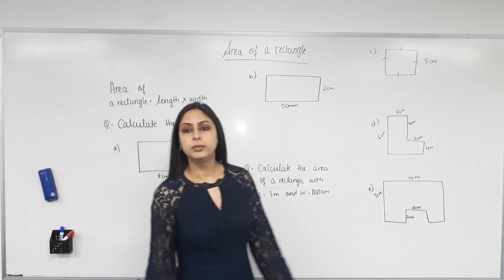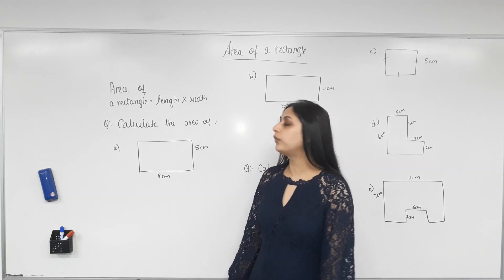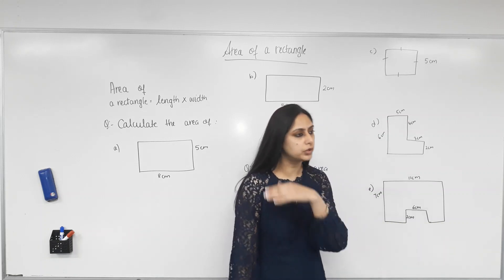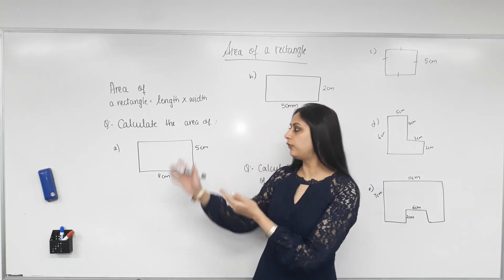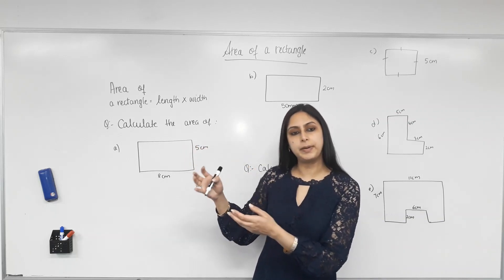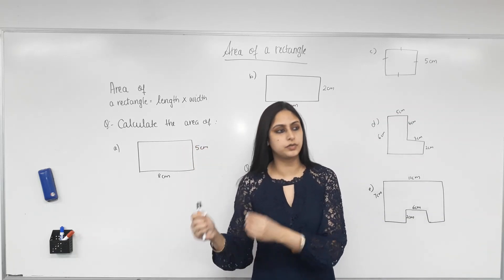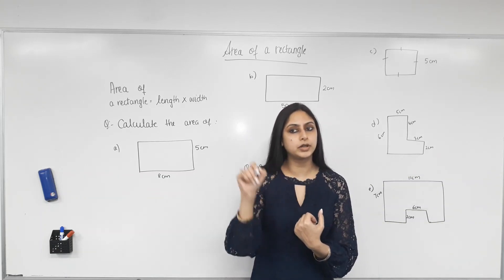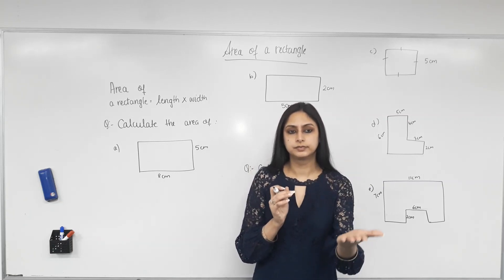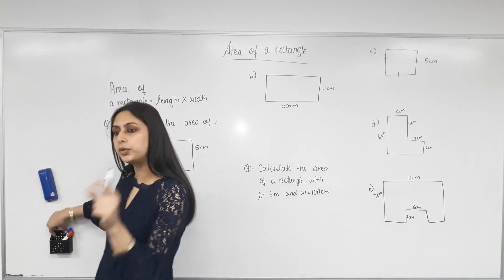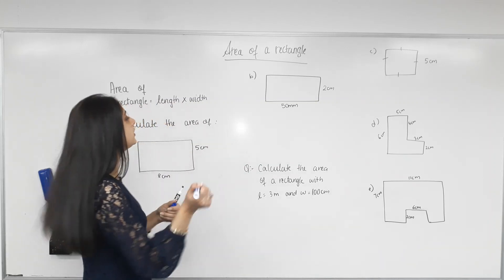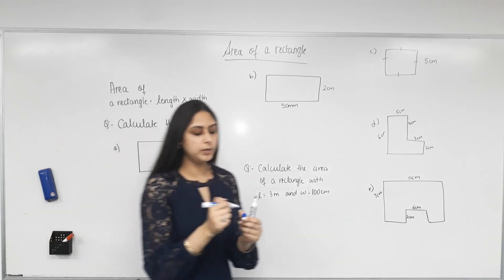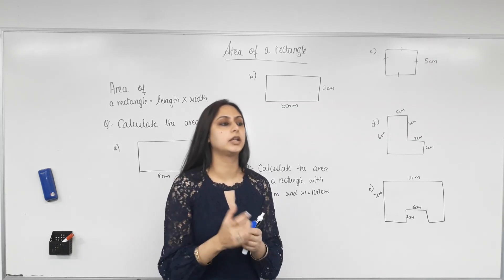Good morning. We are moving on to finding the area of a rectangle, but this time we're not going to count the number of squares or draw the squares in between. We know that if we place one-square-centimeter tiles we'll find a pattern, and there's a formula we can use directly. We talked about it in the previous lesson — the formula is: area of a rectangle equals length times width.